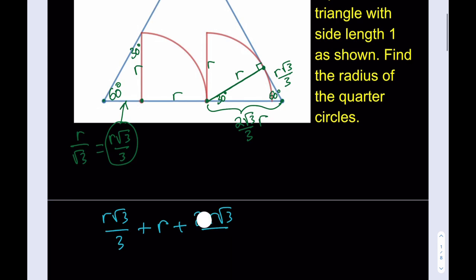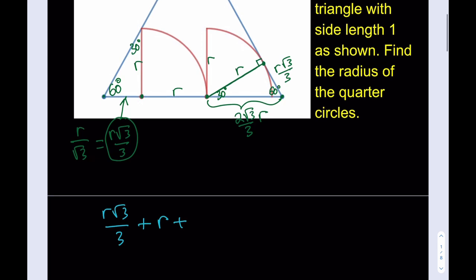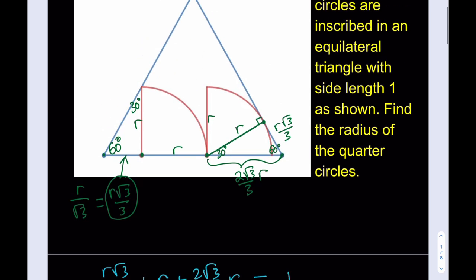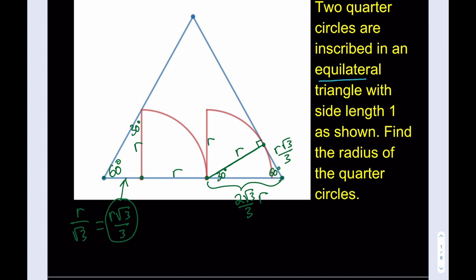Or I could just write it to keep the original. 2 root 3 over 3R. And as you know, they all add up to 1 because we're given that the side length for the equilateral triangle is 1. It's given in the problem.